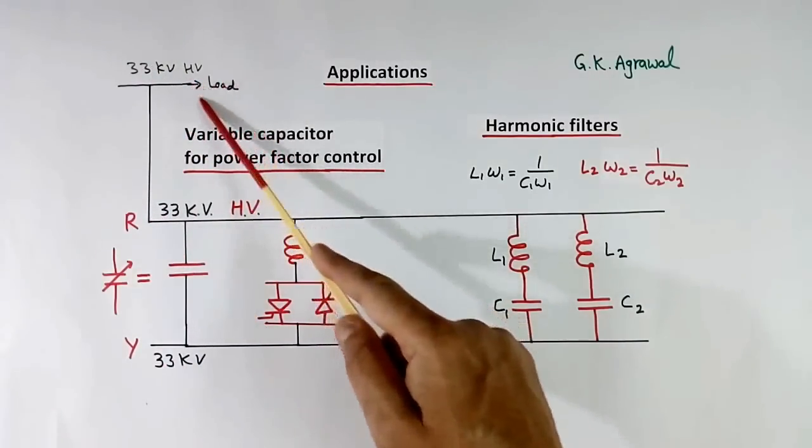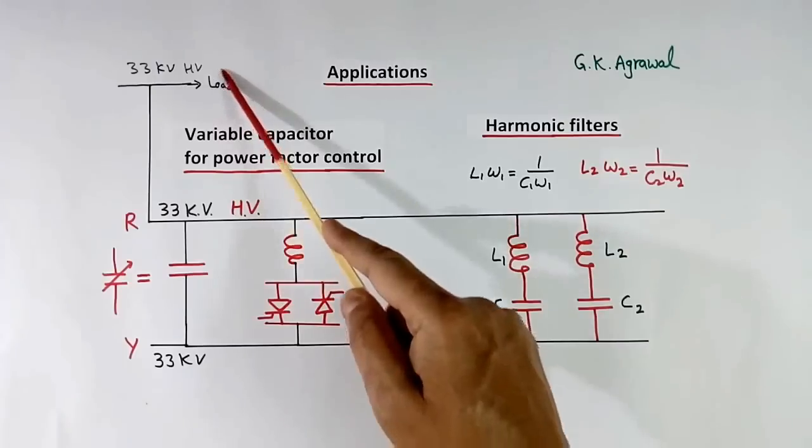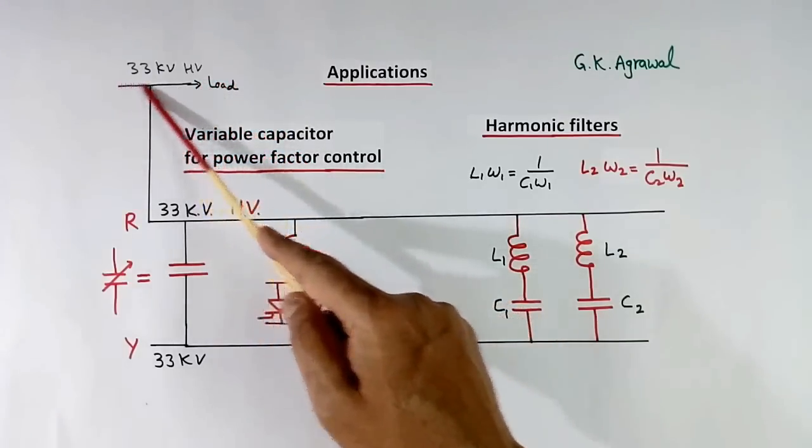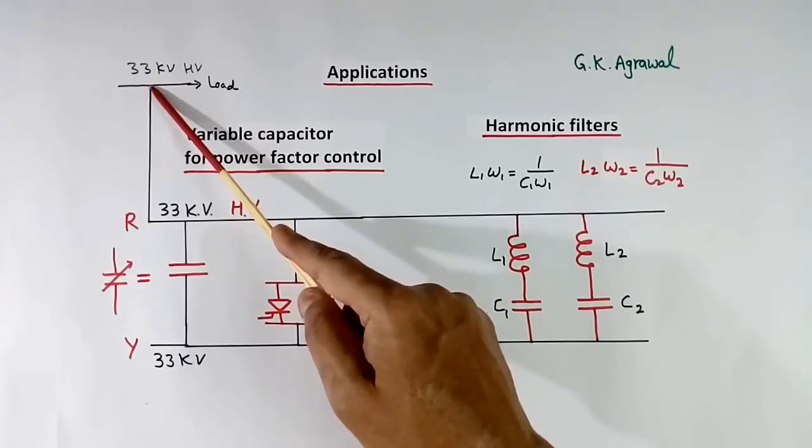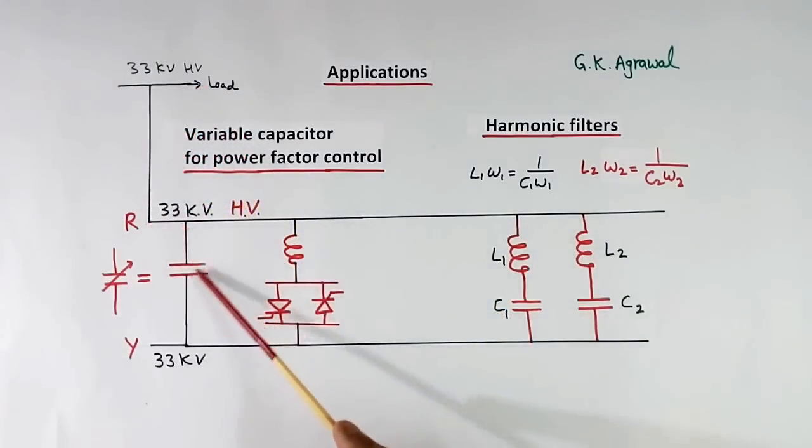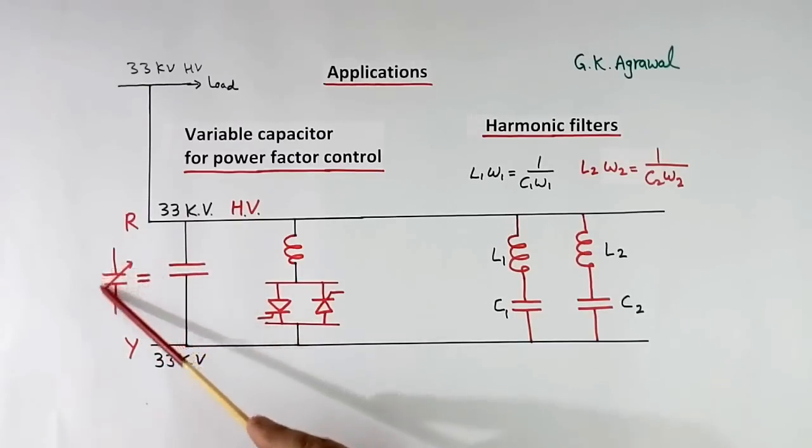This will have a load. This load will not have unity power factor. To improve the power factor here and to stabilize the voltage at this point, we require a capacitor which should be variable. But variable capacitors are not available.